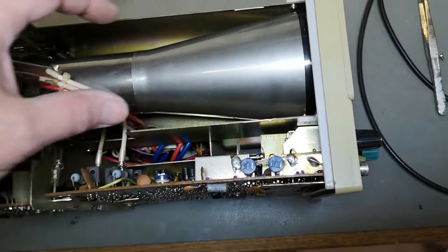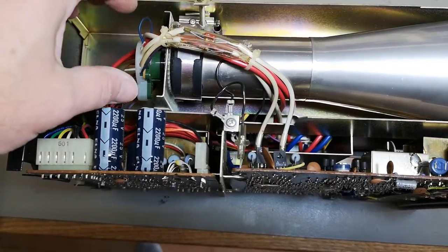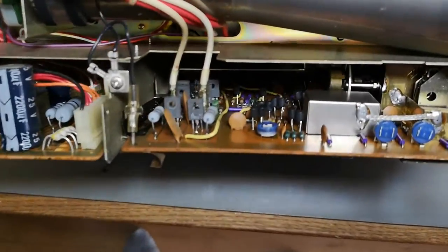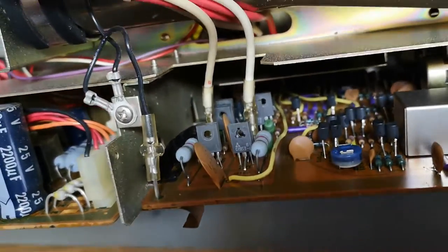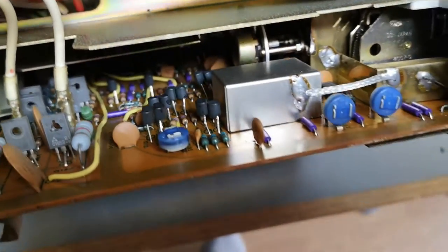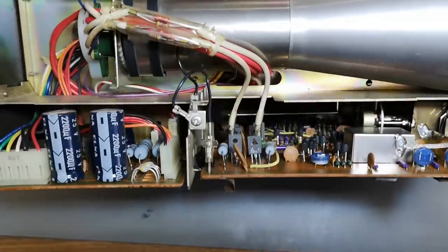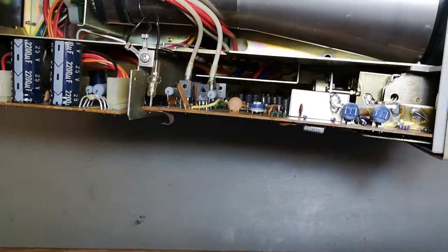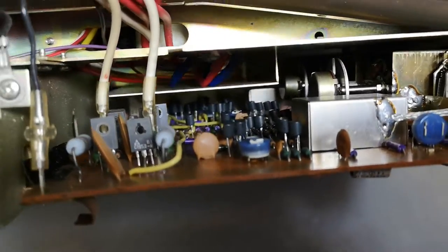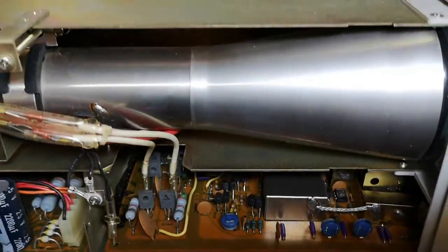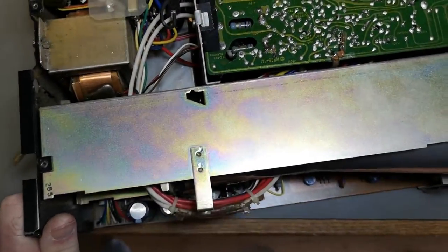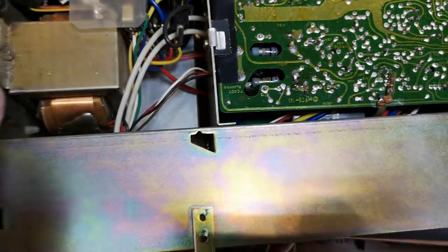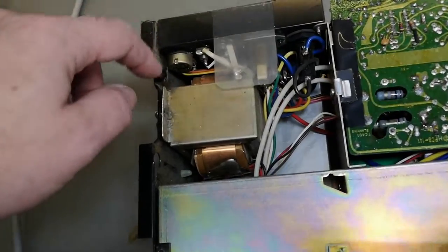And there's actually plenty of space in here. Normally the size of scopes is always related to the length of the CRT. Well, look, there's plenty of space in the back. That's of course the deflection amplifiers. But it's really beautifully made, and it is in really good condition. There's no ugly smell or anything here. It is really nice and clean. Tons of transistors, look at that.